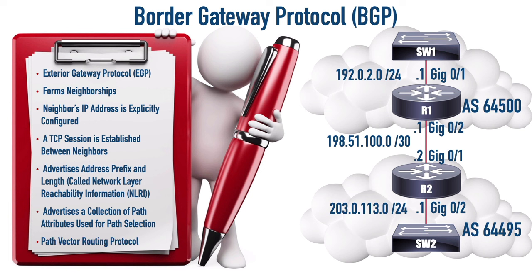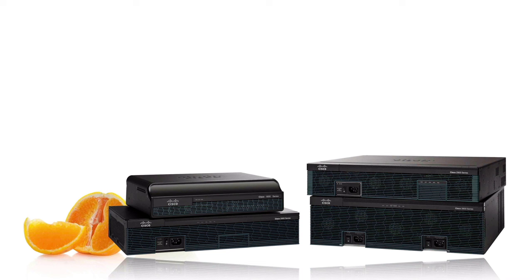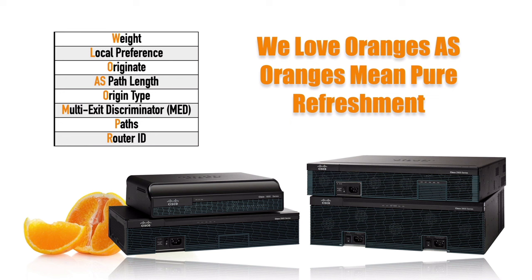Before we do the configuration, let's talk about BGP's path selection algorithm. There's a little gray area here because some documentation identifies about eight different path attributes, others nine or eleven, and the most I've ever seen is thirteen - though several of those rarely get used. Probably the most common memory aid for BGP path selection is this acrostic: 'We Love Oranges As Oranges Mean Pure Refreshment.' Can you explain what each of those eight path attributes mean and identify them in the output of the show IP BGP command? That's what we're going to do in this video.